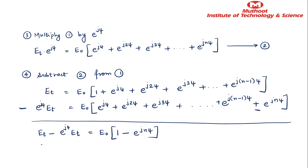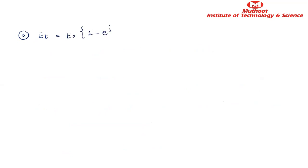After the subtraction, we can take E_total common: E_total · (1 − e^(jψ)) = E₀ · (1 − e^(jNψ)). Therefore E_total = E₀ · (1 − e^(jNψ)) / (1 − e^(jψ)). This is equation number 3, and from this we can further simplify.